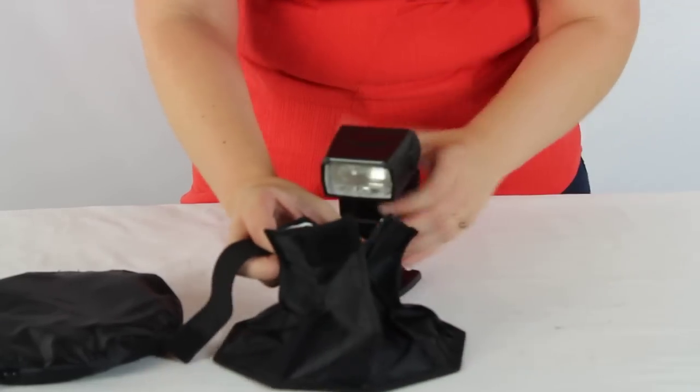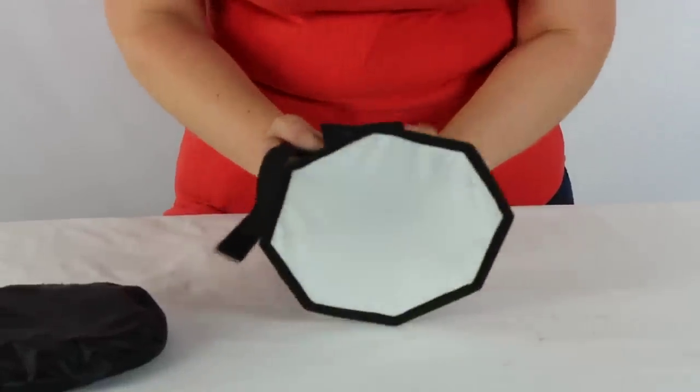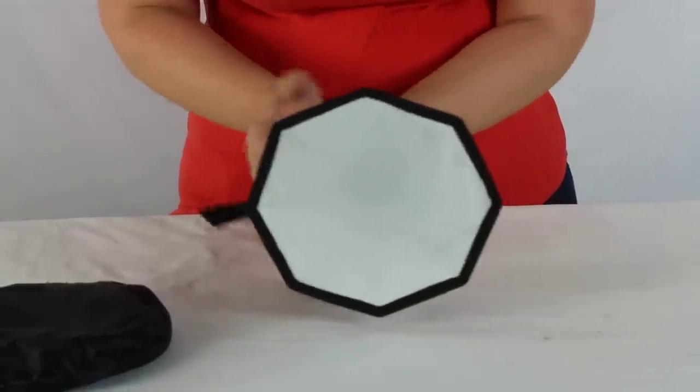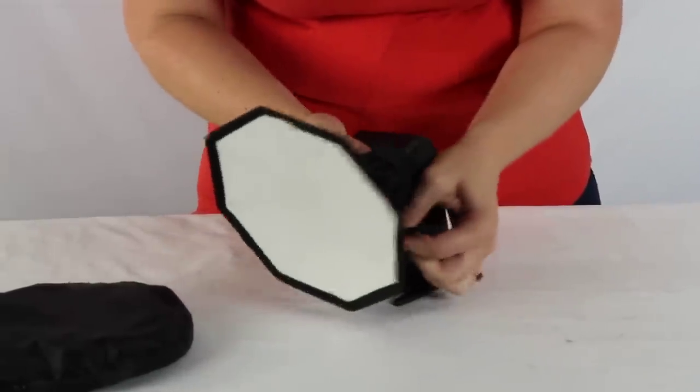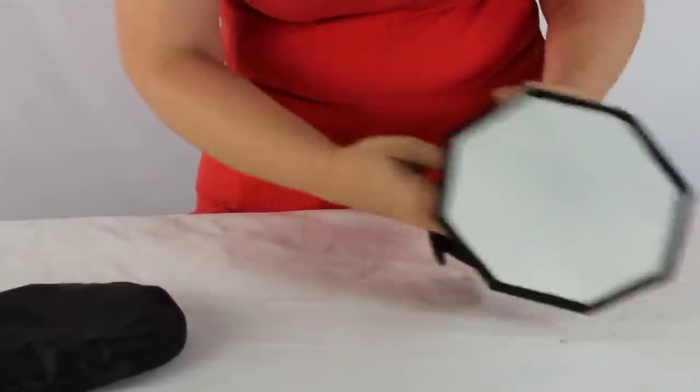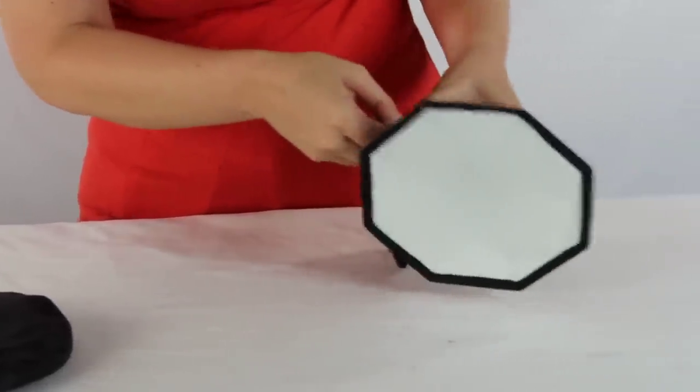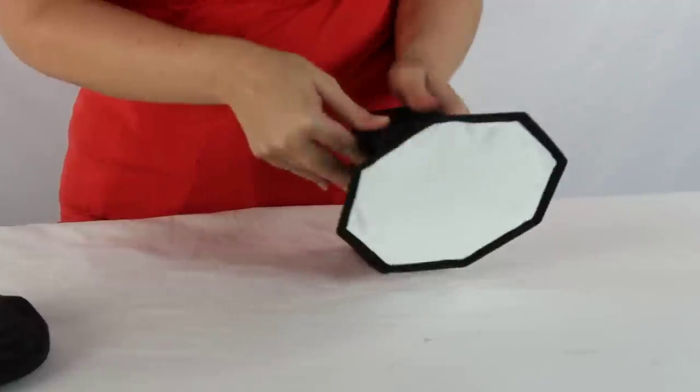What you want to do is get the front of your speedlight and get your flaps pretty well set in place. And then you're just going to wrap around and get over to the Velcro side and tighten it down.